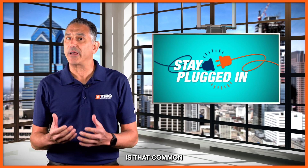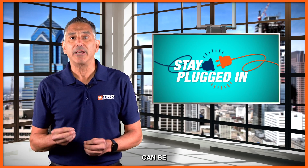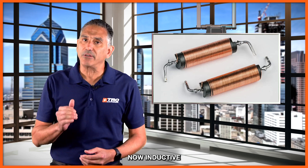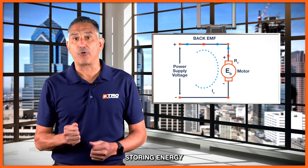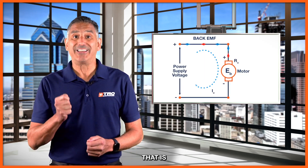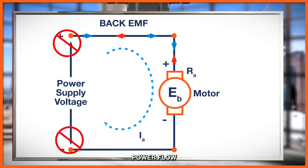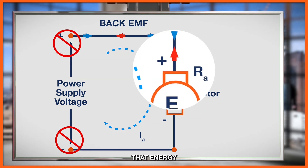Common inductive circuits can be described as electric motors, relays, or solenoids. Inductive loads have a property of storing energy that is generated in a magnetic field. The moment we stop that power flow to the load, the load will try to release that energy back to the power source, which in our case is a power supply.